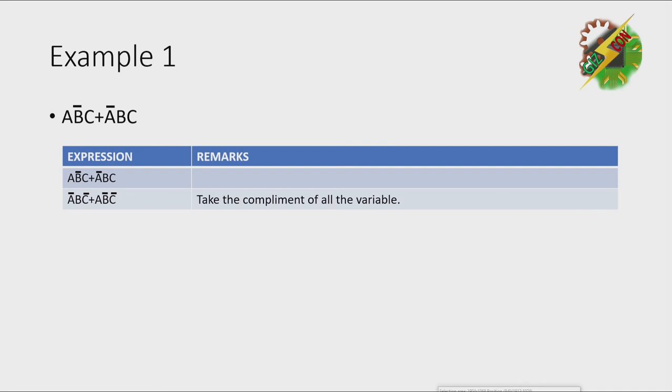As you can see here, A becomes Ā. B̄ becomes B. C becomes C̄. Ā becomes A. B becomes B̄. And C becomes C̄.